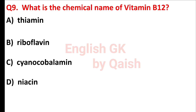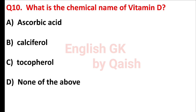What is the chemical name of vitamin B12? Answer is option C, cyanocobalamin. What is the chemical name of vitamin D? Answer is option B, calciferol.